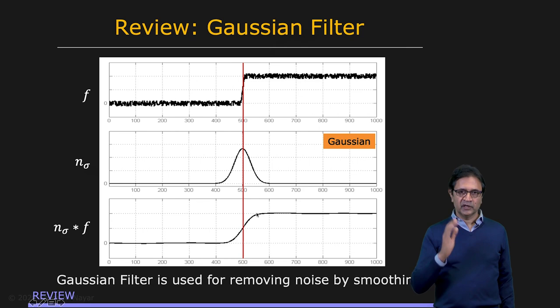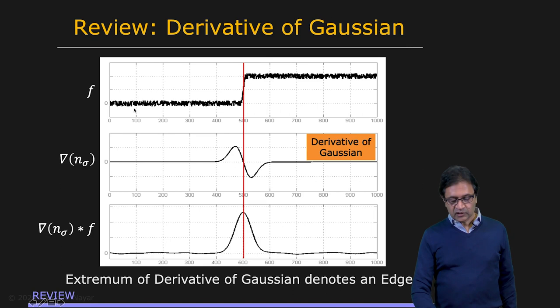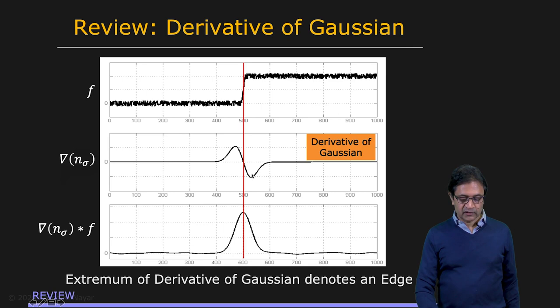You can find the position of the edge by using the first derivative of the image. And instead of applying the first derivative to the image directly, you can find the first derivative with respect to x of the Gaussian. That is this function right here, the derivative of the Gaussian. You convolve the image with this function, and you end up with this response, where you get a clear peak at the location of the edge.